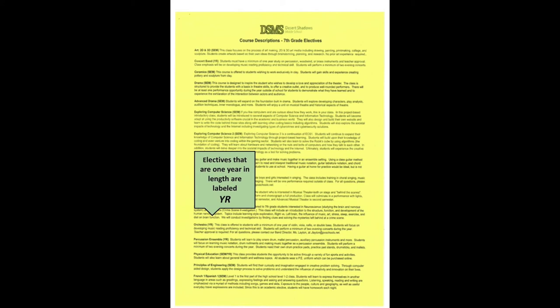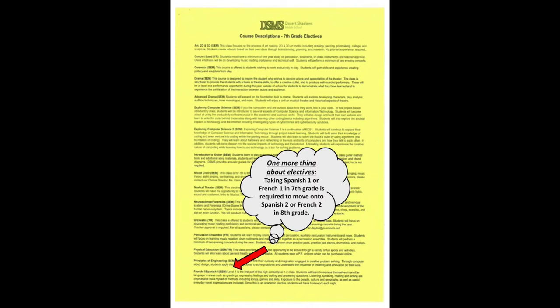Full year electives include different levels of band, orchestra, percussion, PE, or mixed choir. If you check one of these options under Full Year, you will be in that class for your entire 7th grade year. Please note, some of the courses also have the option of taking it for one semester instead. Both French 1 and Spanish 1 are 7th grade electives — each class is one semester in length and is an introduction to the language. Please keep in mind that if you would like to pursue a full year of Spanish or French as an 8th grader, you must take either French 1 or Spanish 1 in 7th grade.